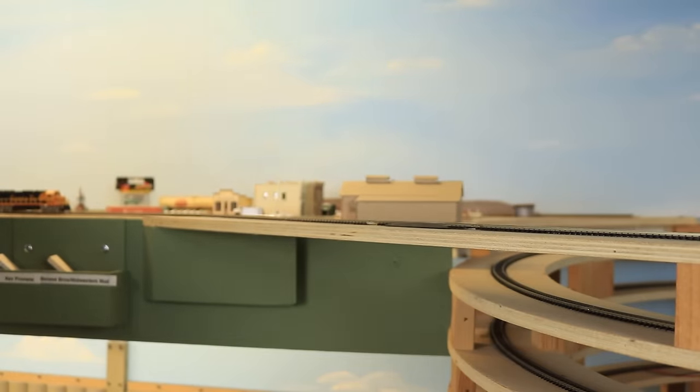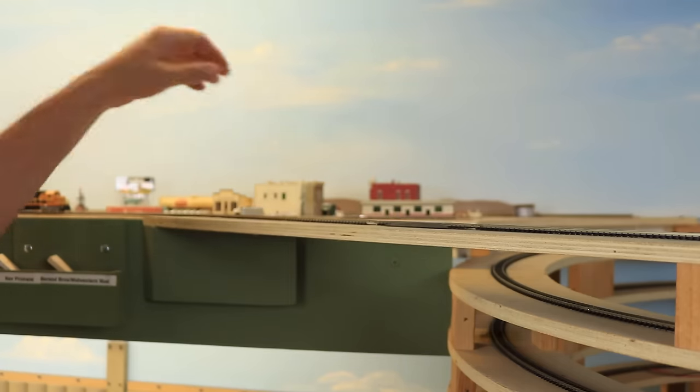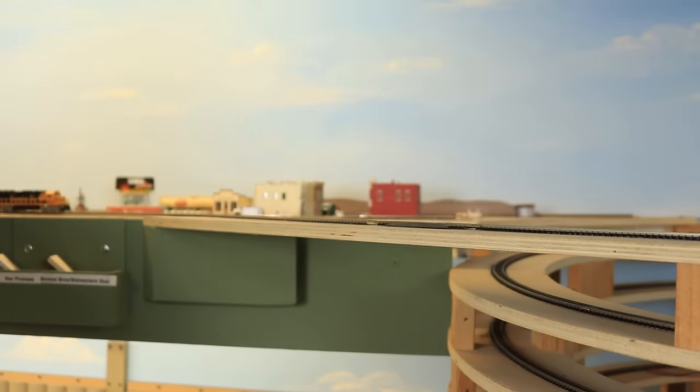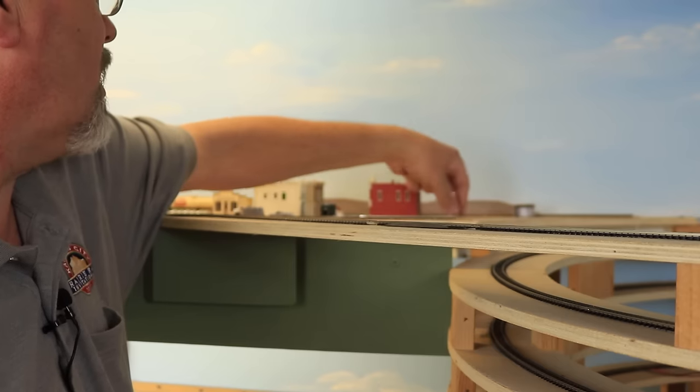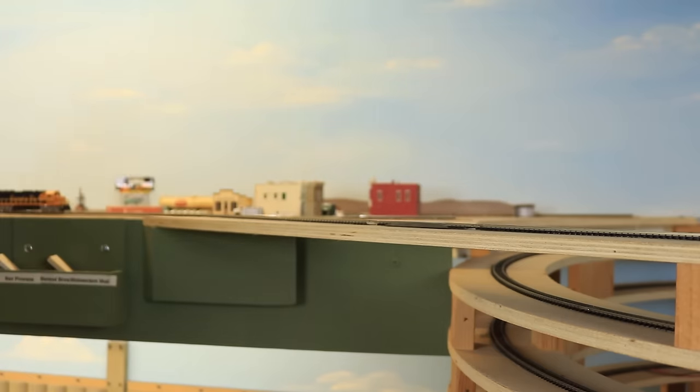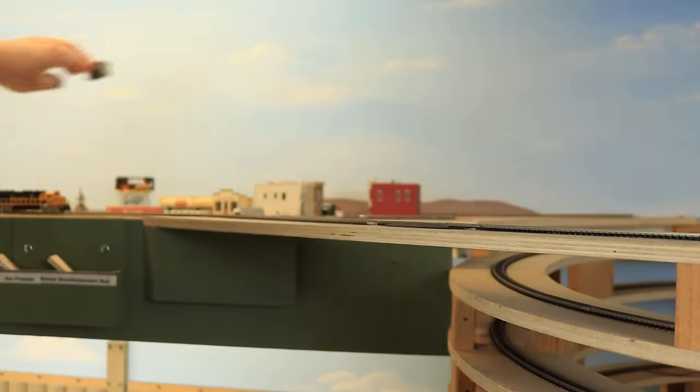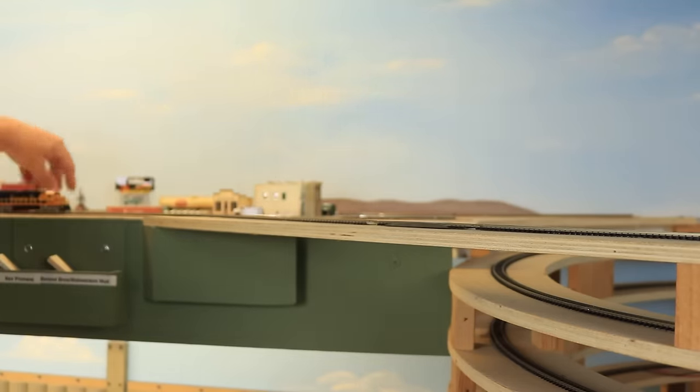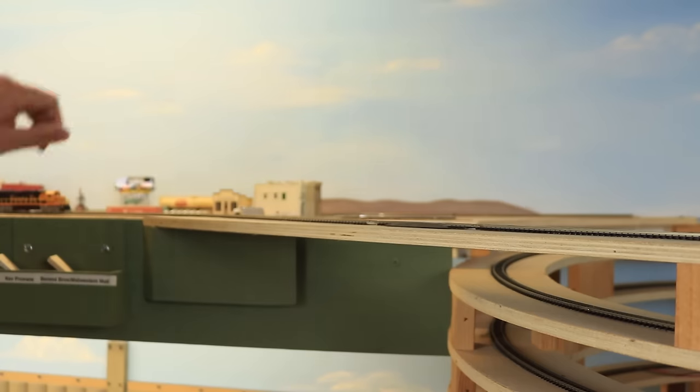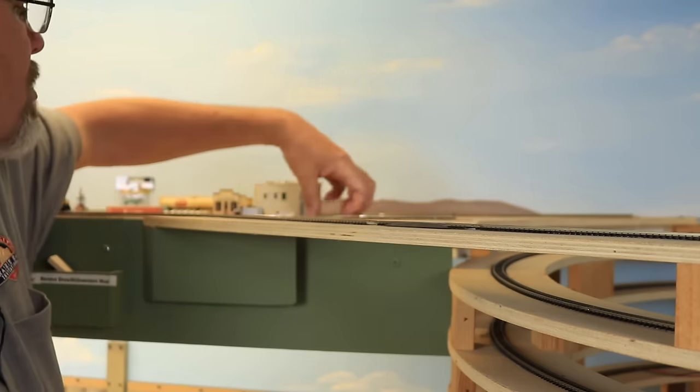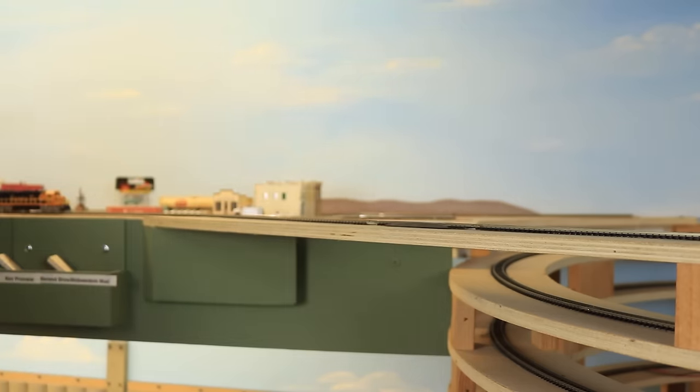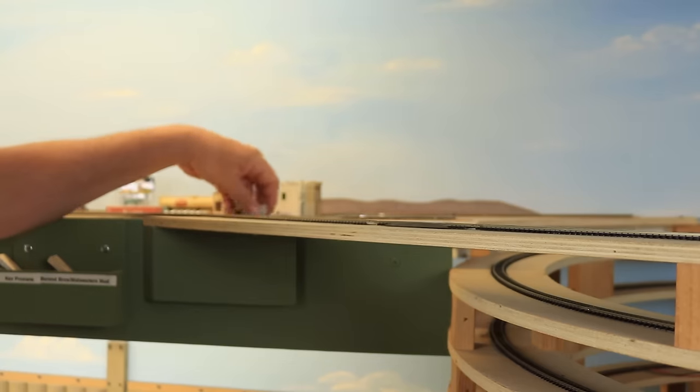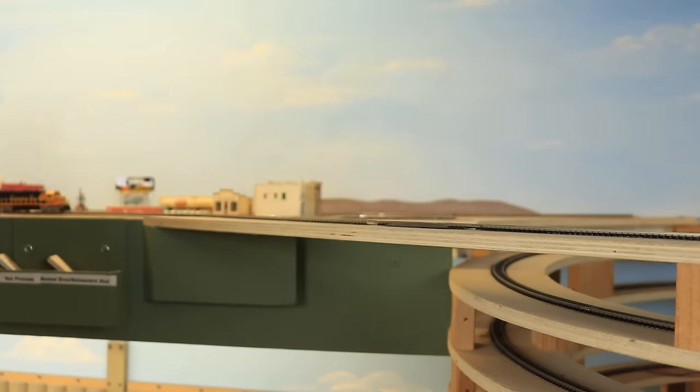My camera seemed intent on focusing on the fascia instead of what I was doing. One of the benefits of the new layout expansion is that it will allow me to put some distance between Bowie and Wichita Falls. On this version of the layout, a train that is in Bowie is also in Wichita Falls, and vice versa. It's been a real frustration. It will also allow me to expand my version of Bowie, Texas. I think I'm going to be much happier with that.